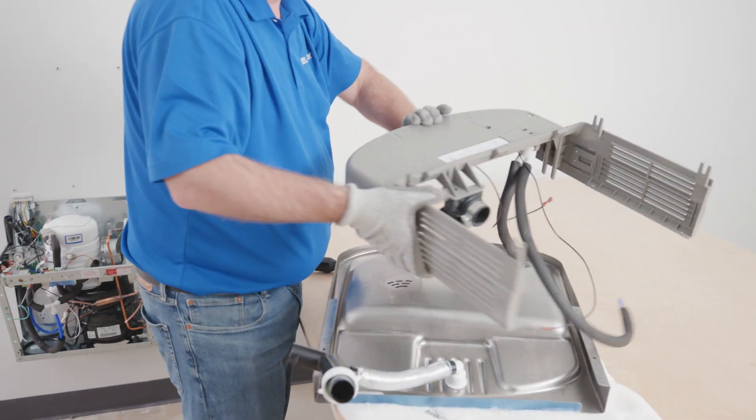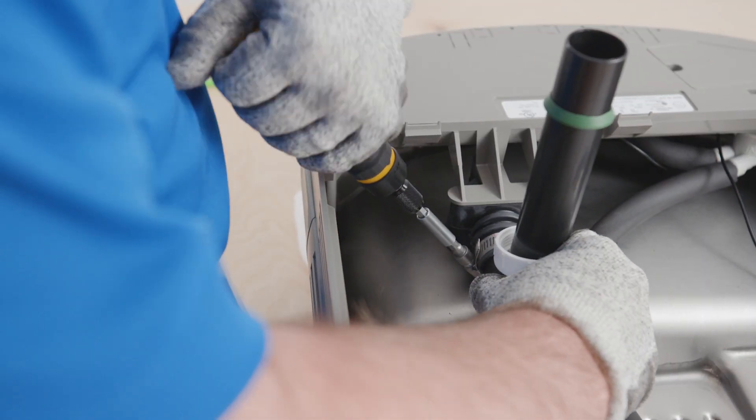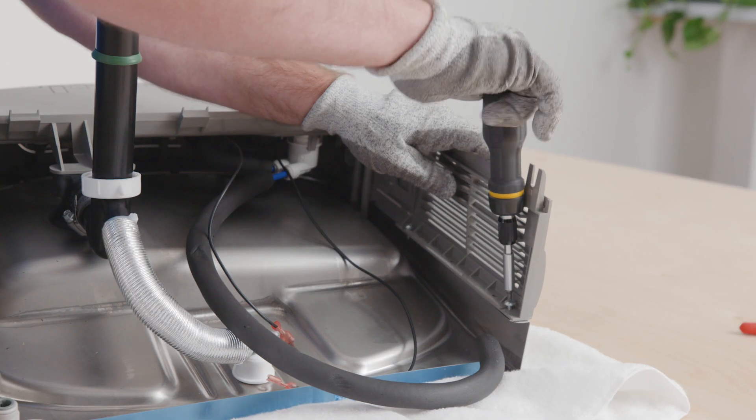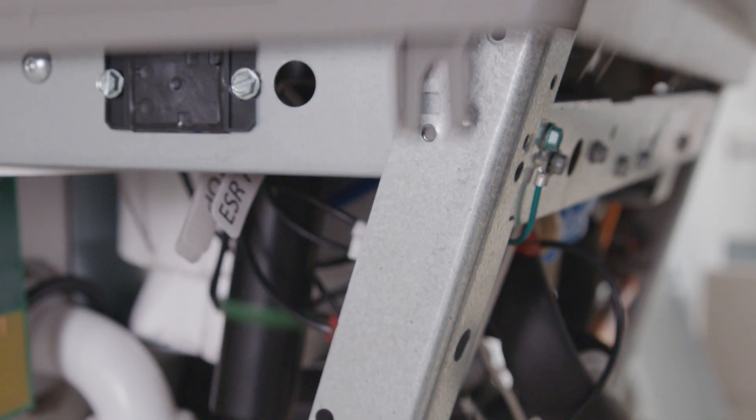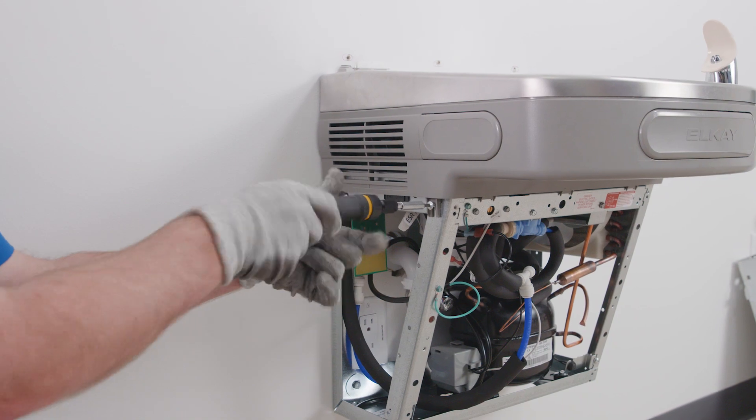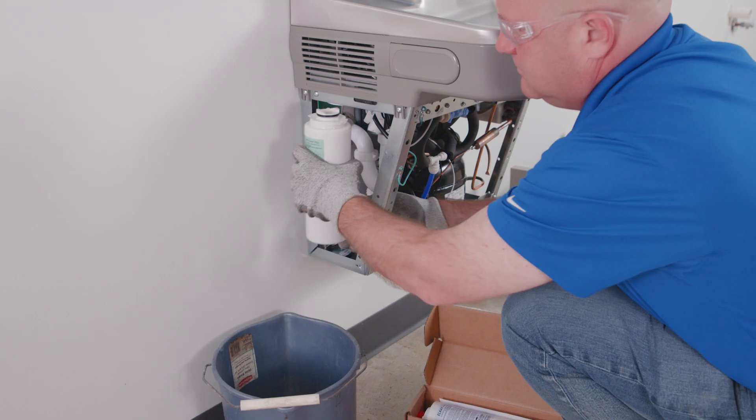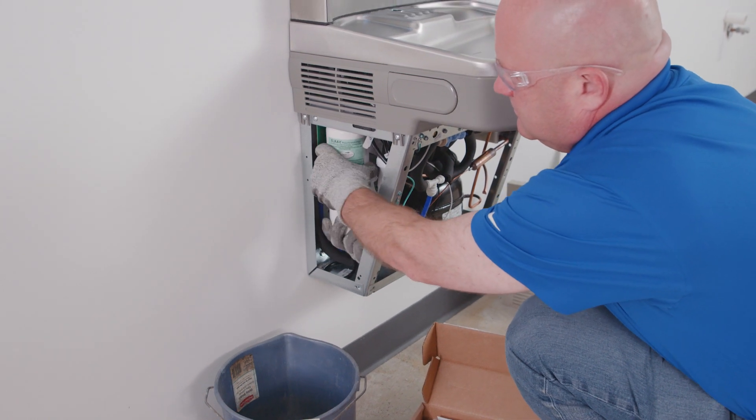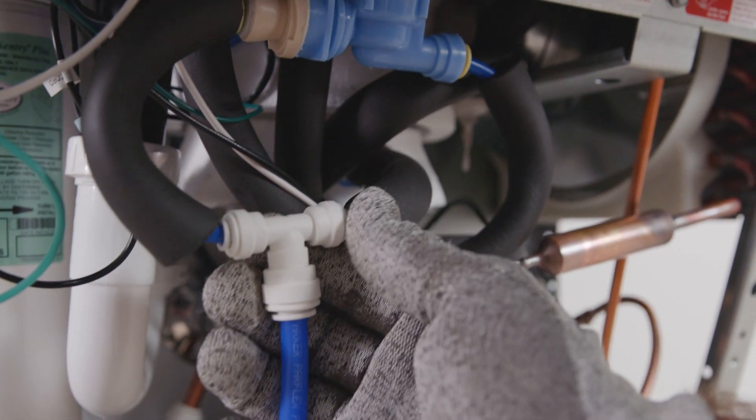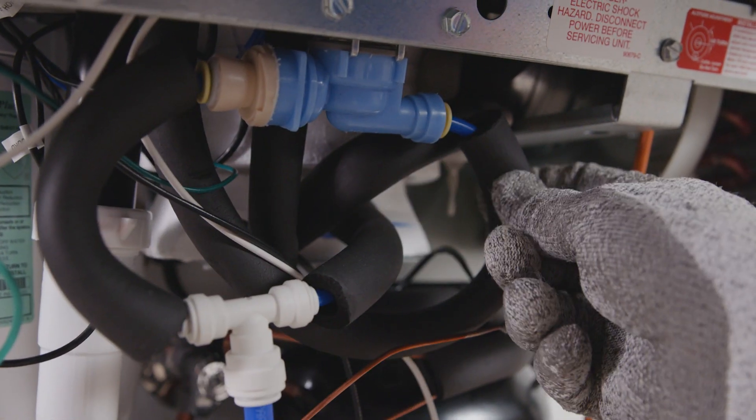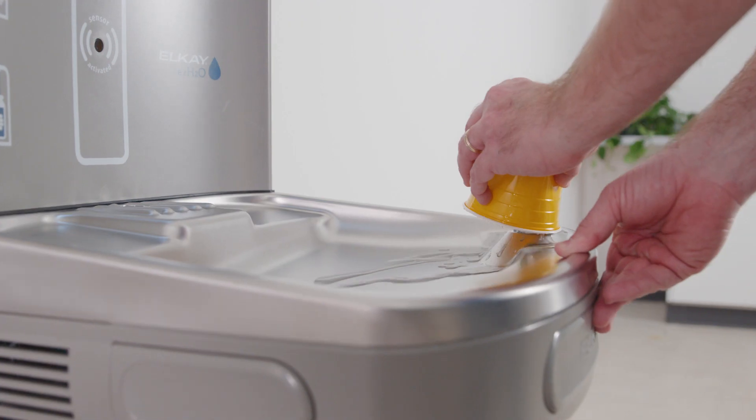Reattach the basin and shroud assembly to the cooler. Turn the water back on and check for leaks. Fix any leaks before moving on. Plug in the unit, cover the bubbler with a cup or small bucket, and purge any air that's in the system.